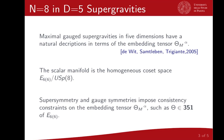It is important to underline that the scalar manifold is a homogeneous space, which will be needed in what follows. Supersymmetry and gauge symmetry impose some conditions on the θ tensor, consisting in a linear constraint imposing that θ belongs to the 351 representation of E6, and in a series of quadratic constraints. These constraints are then transferred into conditions on the T tensor, which appears in the Lagrangian inside the mass terms of the fermions and as shifts in the supersymmetry transformations. In addition, the T tensor can be used to describe the scalar potential.